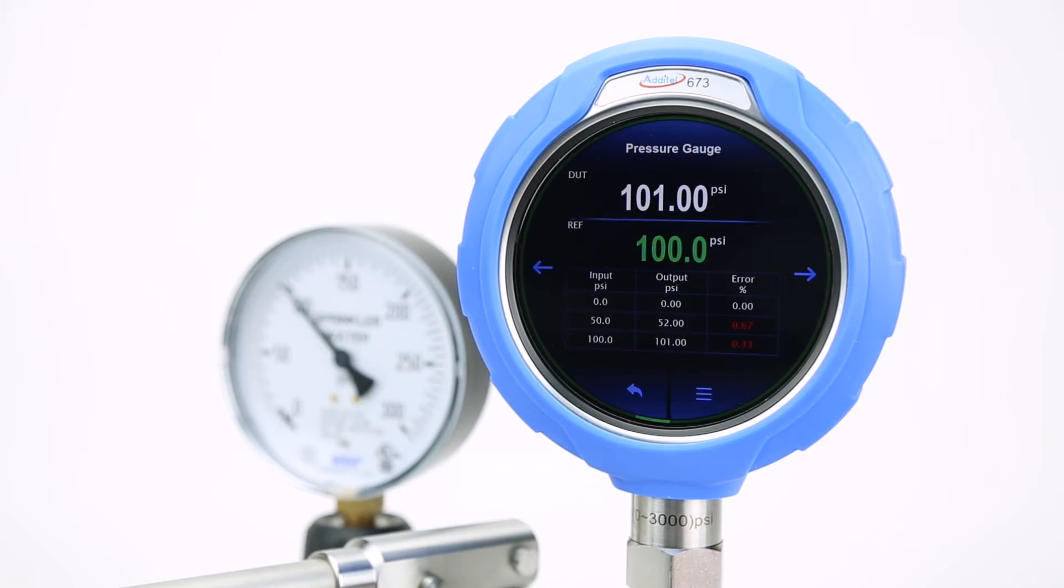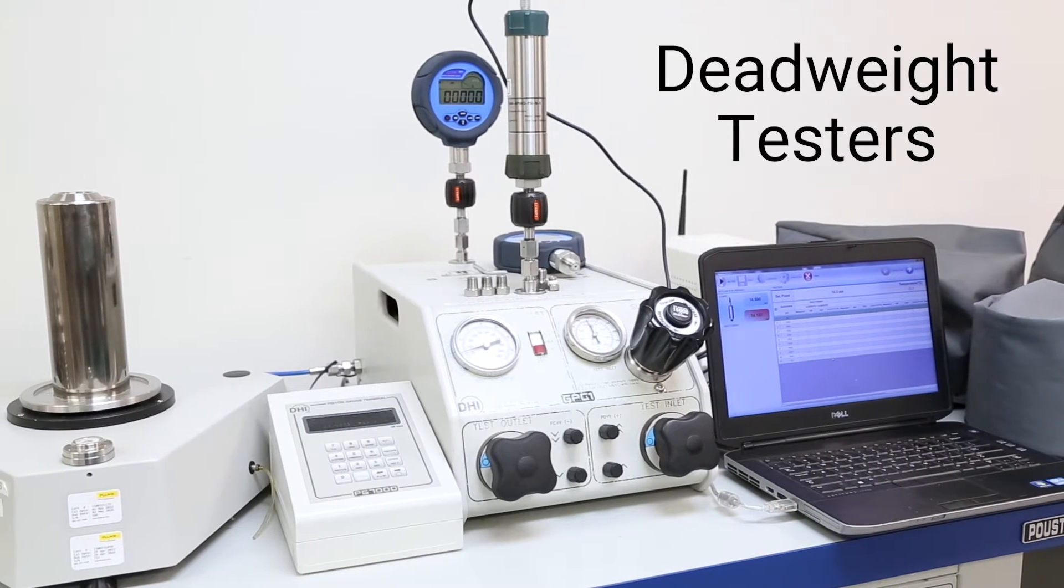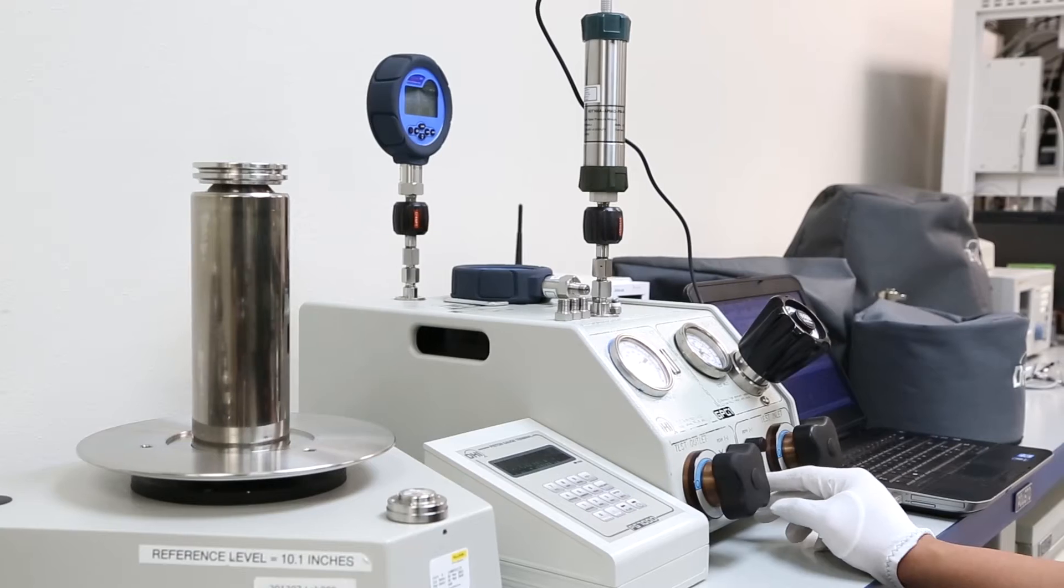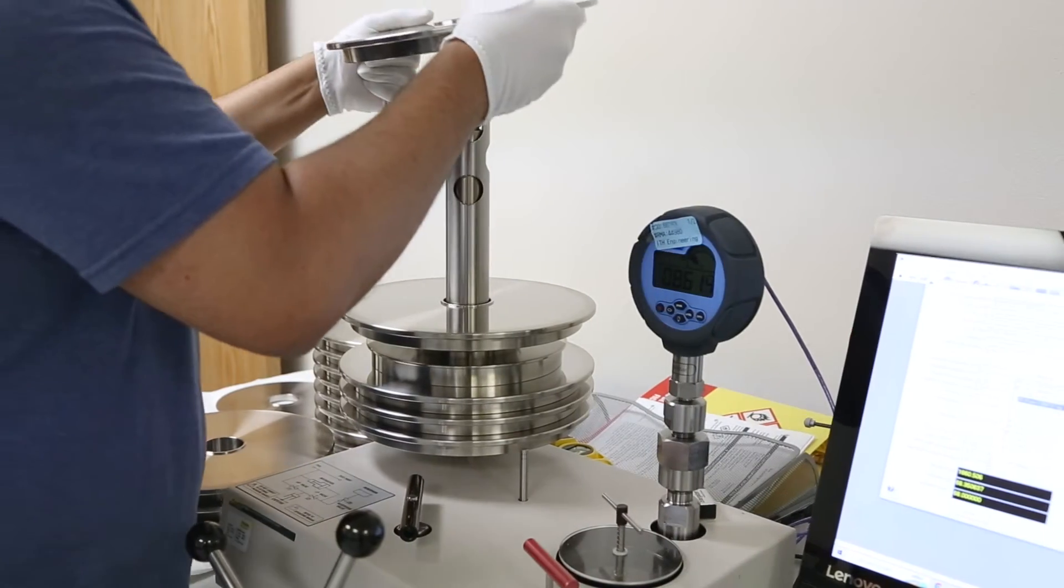Deadweight testers are a more advanced pressure generation device, usually found in calibration laboratories, as they offer one of the highest levels of accuracy for testing. The most accurate type of deadweight tester is a piston gauge.